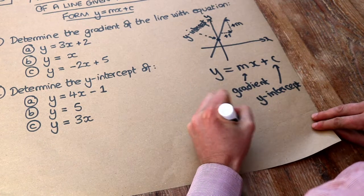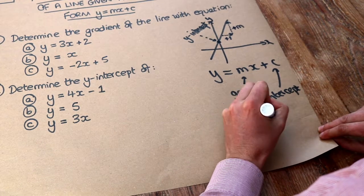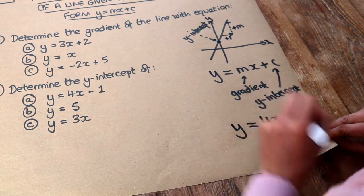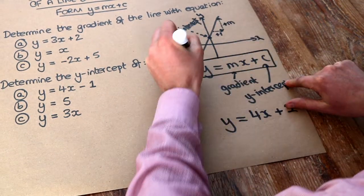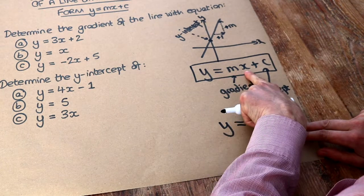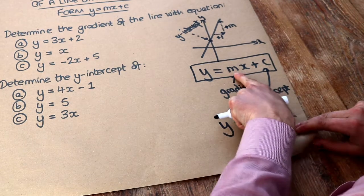So let's just say we had y equals, I don't know, 4x plus 2. So if we compare this to this key equation here, the number in front of the x, known as the coefficient of x, is the gradient.